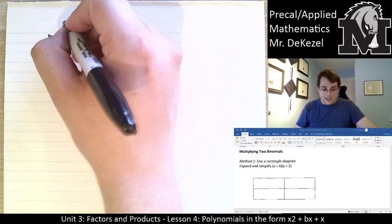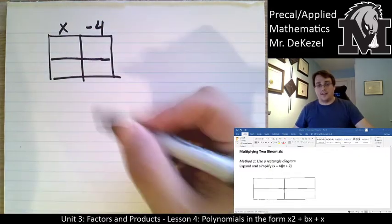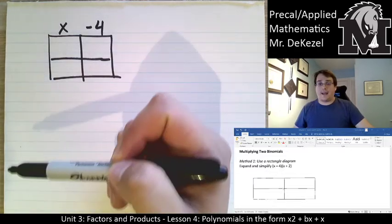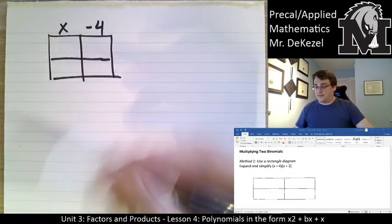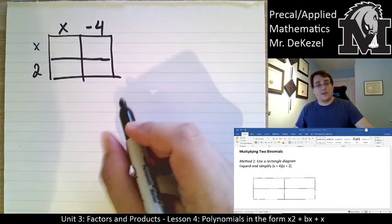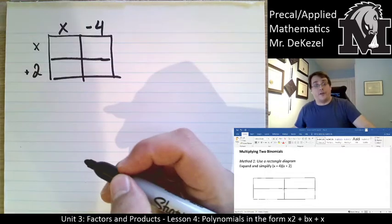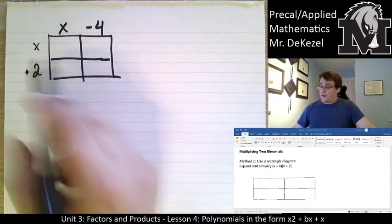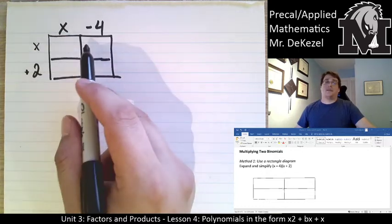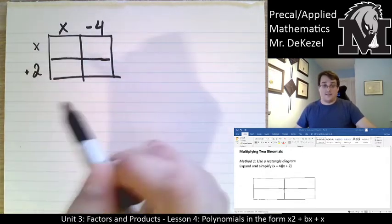And on top is going to go x minus 4. Those are two separate entities, they are from the first bracket there, x and minus 4. And then here we're going to have x and 2. Those are two separate entities. You can go plus 2 if you want, but you don't have to. Now you're going to take each box and write the intersection of the two pieces in it.